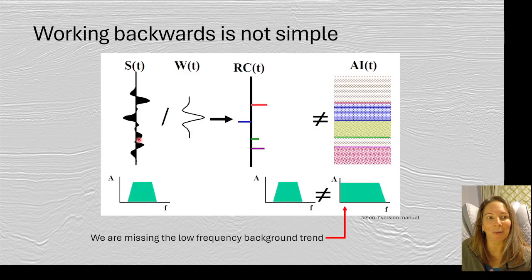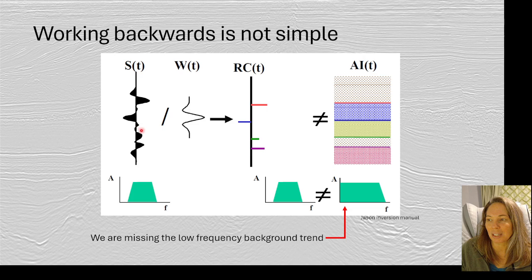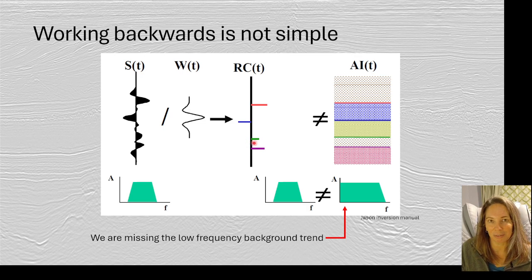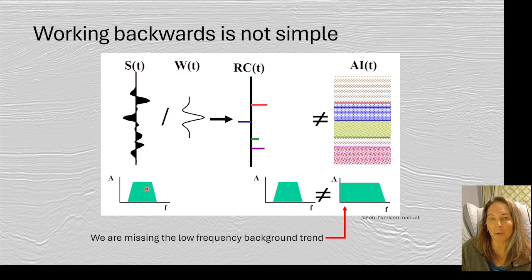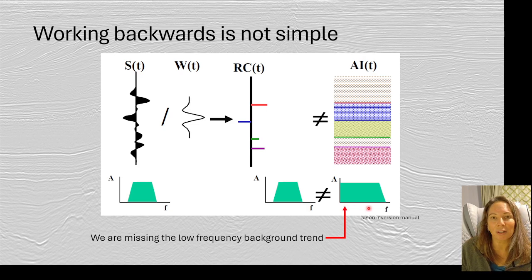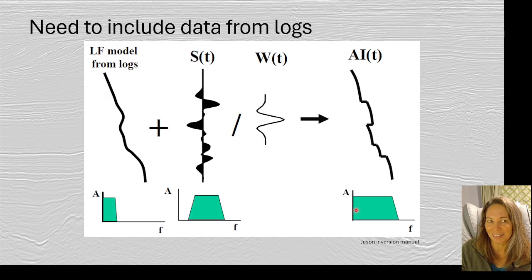This is our forward problem, and now we want to do the inverse problem. We could take our seismic data, remove the wavelet from it, and get our reflection coefficients. But the one thing we can't get yet is the acoustic impedance, and this has to do with the frequencies available to us. In the seismic data we don't have that low-frequency trend — those lower frequencies are missing, so we can't recover them in order to get the true acoustic impedance.